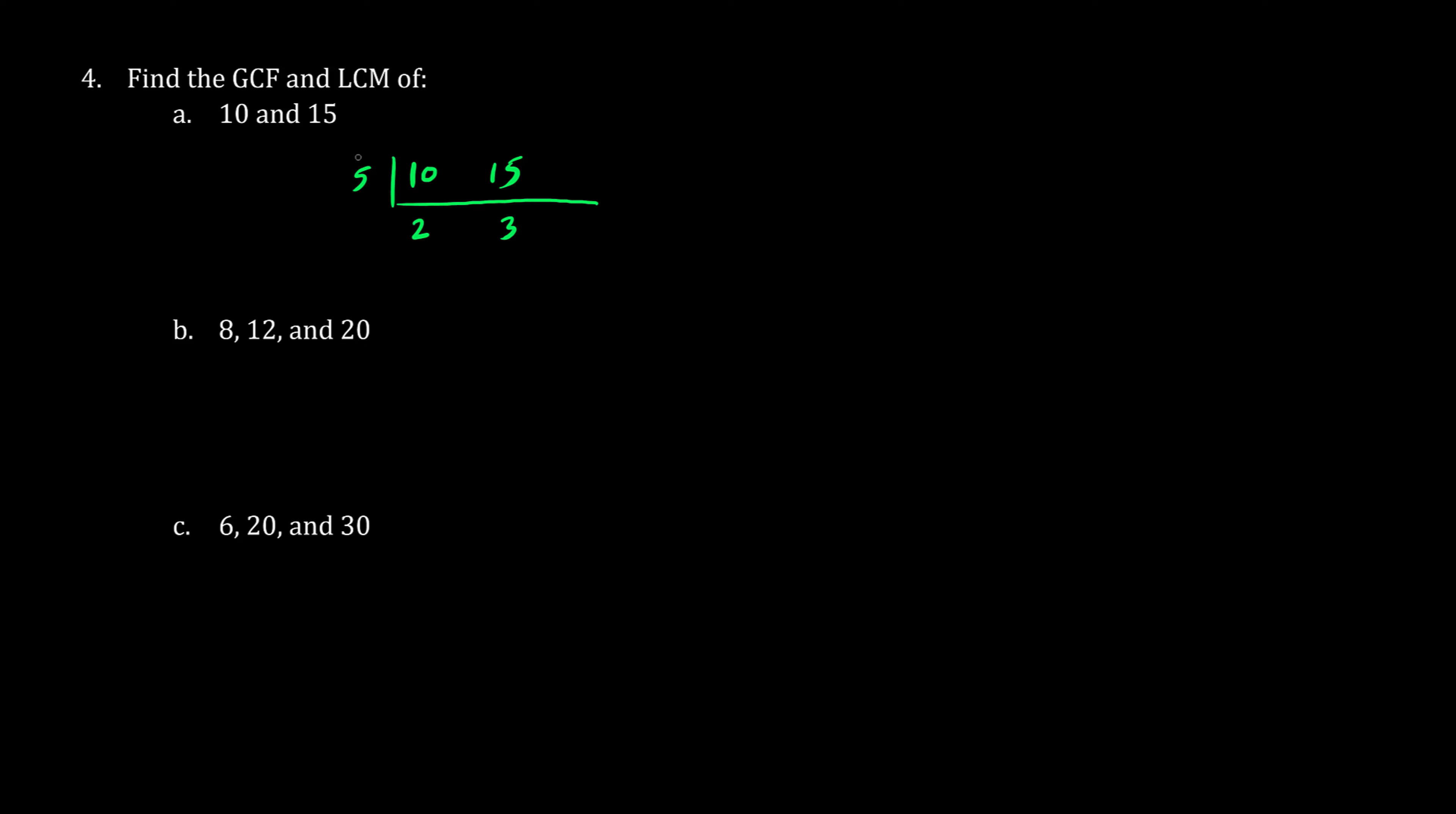So this number here is your GCF, the biggest number that fits into both 10 and 15. Now the numbers 2 and 3 are prime numbers, so we're done. The LCM is simply 5 times 2 times 3. So the GCF is 5 and the LCM is 30.